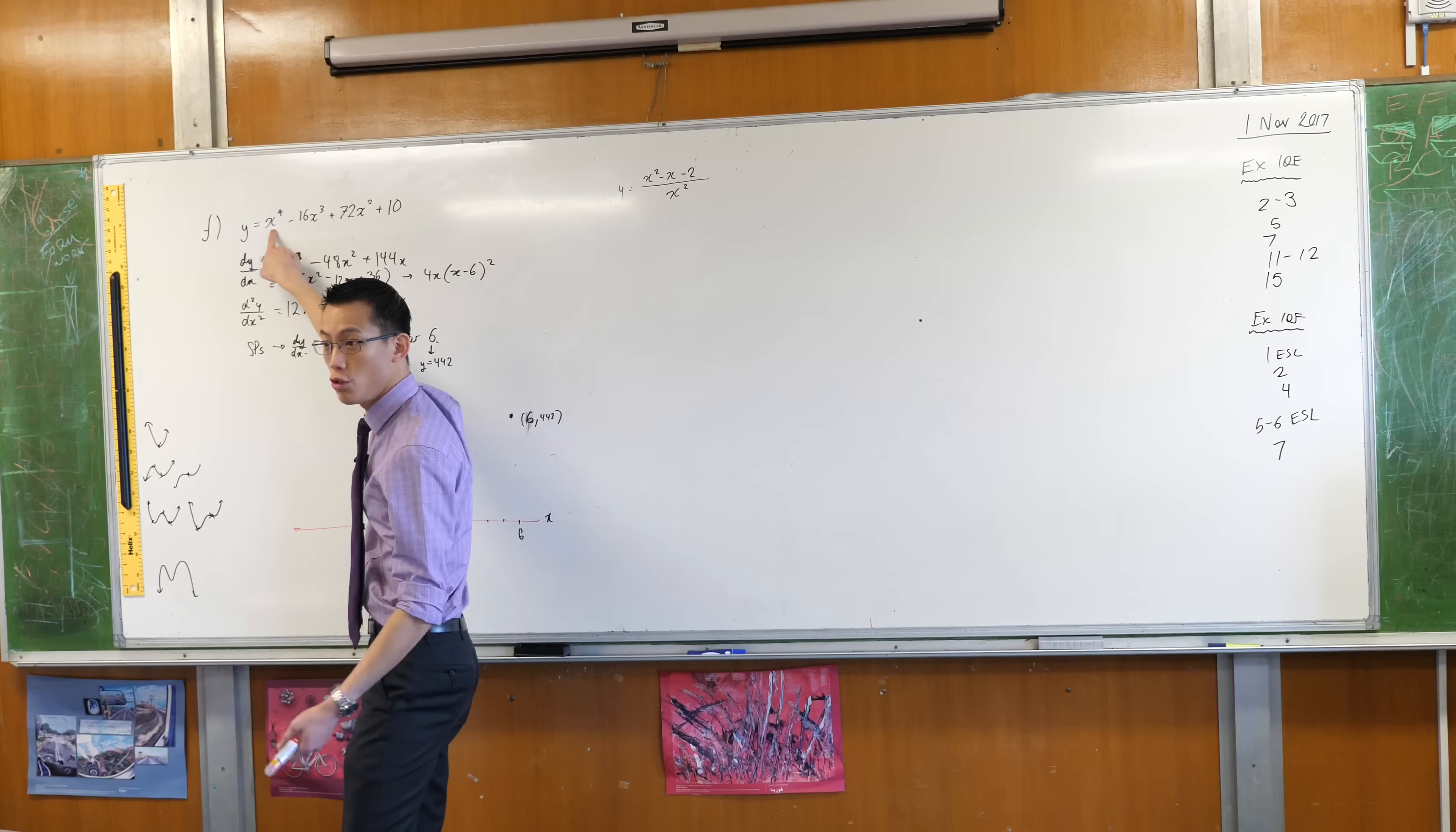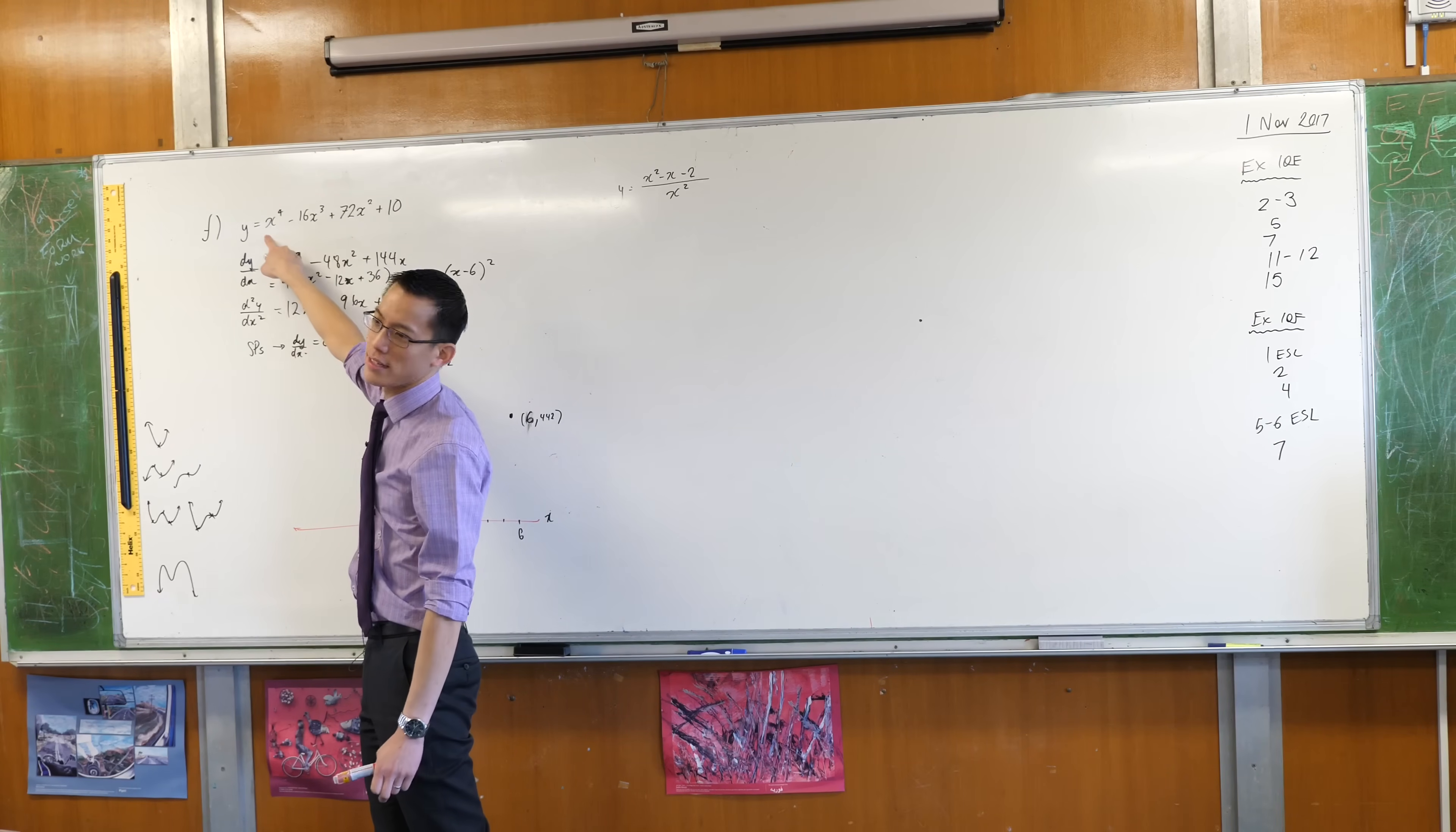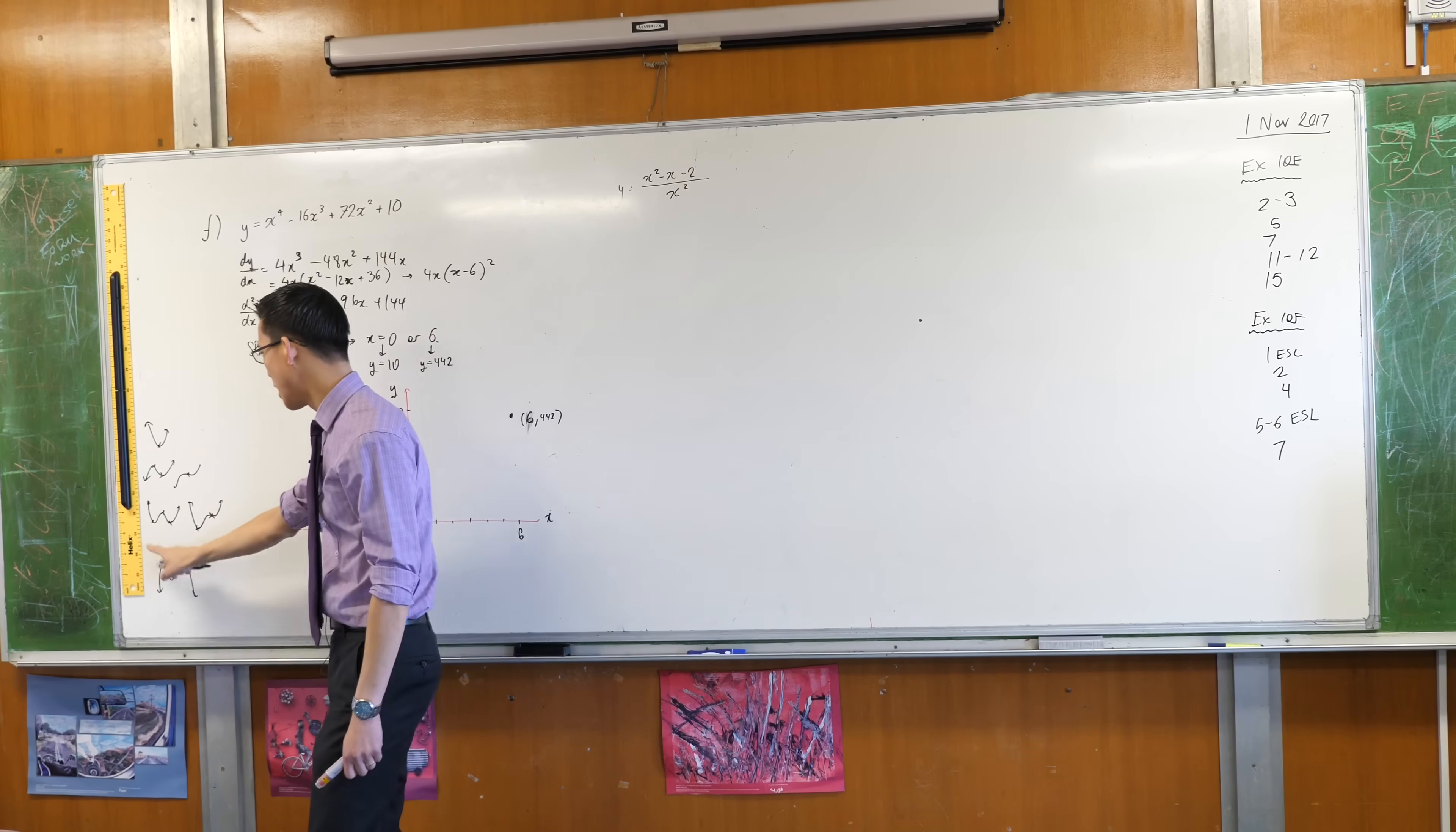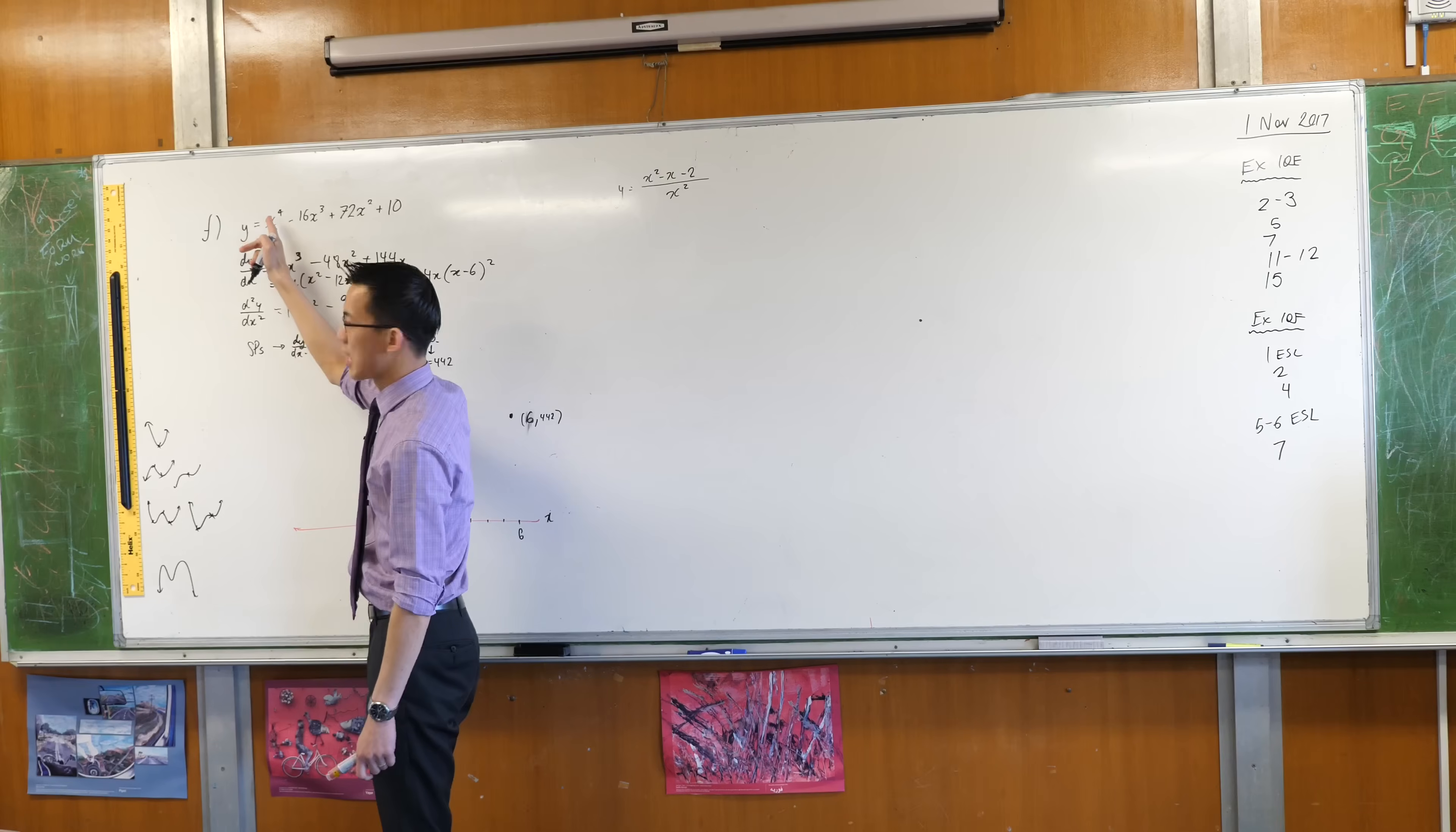When you put large values into here, this guy x to the four becomes a huge positive number which basically dwarfs everything else that's happening here. Even though x cubed is still going to be big, next to x to the four it's like a grasshopper. When you put in negative values of x, very large ones, what's this guy doing? It's still going to be a large positive number. On the other hand, if I were to slap a minus sign out the front, you're going to get this situation because it's going to be negative times a positive number.